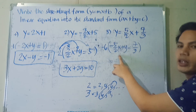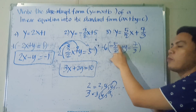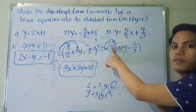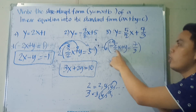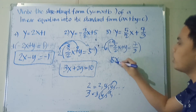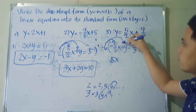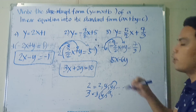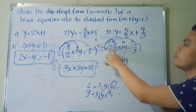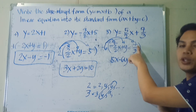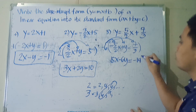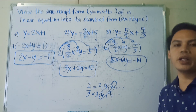Negative 6 times negative 5/2: multiply negative 6 by the numerator negative 5 to get positive 30, then divide by the denominator 2, giving 15X. Negative 6 times positive Y gives negative 6Y. Negative 6 times 7 over 3: multiply negative 6 by positive 7 to get negative 42, then divide by 3, giving negative 14. So the final answer is 15X minus 6Y is equal to negative 14.